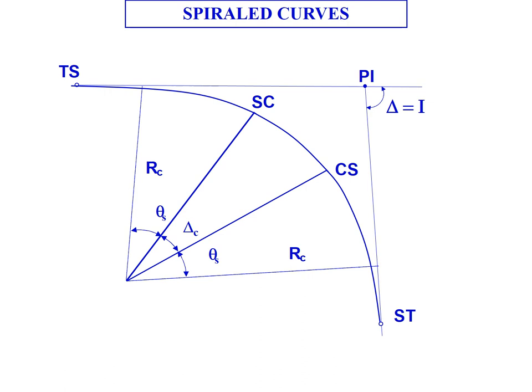That occurs at the SC point the spiral to curve so we leave the spiral at the SC point and begin the circular curve the simple arc will continue that simple arc until we reach the CS point that's the curve to spiral point that's where we end the curve and start the transition to the spiral that spiral then transitions back to the tangent at the ST point the spiral to tangent point.